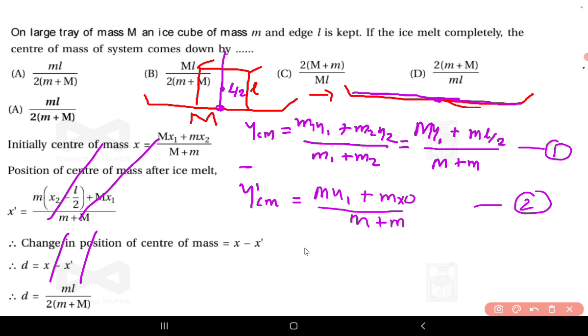So let us assume d is the change, so it is one upon capital M plus m is common. Now we will subtract equation number two from one. So it is M*y1 plus m*l/2 minus...